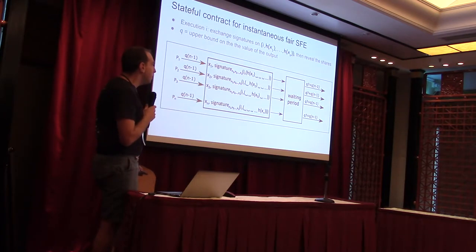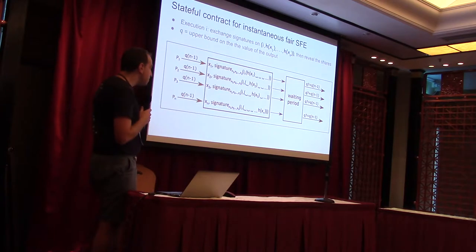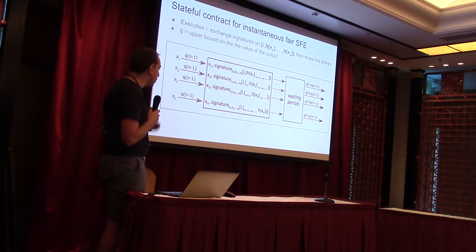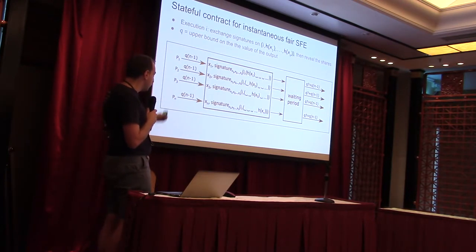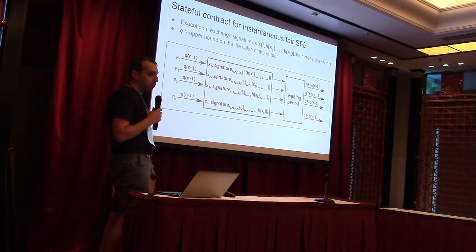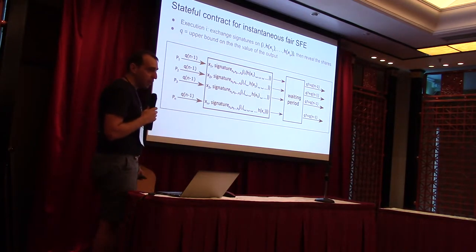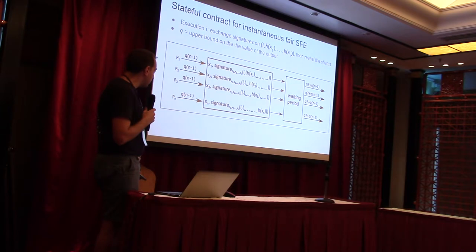This shows how to do fair secure function evaluation that is instantaneous — repeatable many times without interaction with the blockchain. We have what we call a stateful contract. In the beginning, there are N parties. They each submit a security deposit of Q times (N minus 1) coins. Q should be regarded as the compensation an honest party gets if it didn't learn the output. They submit the coins into the contract and register their public key identities.